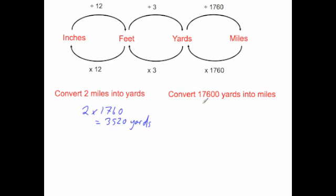Next, convert 17,600 yards into miles. To convert from yards into miles you divide by 1,760. So 17,600 divided by 1,760 is equal to 10 miles.